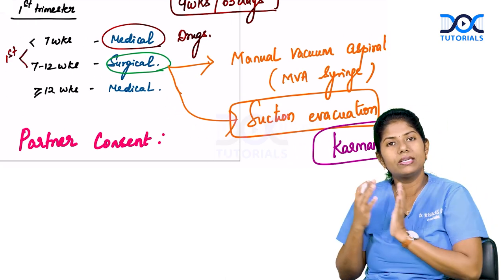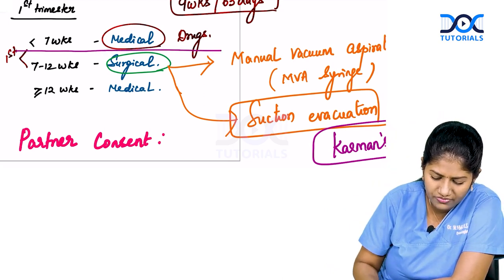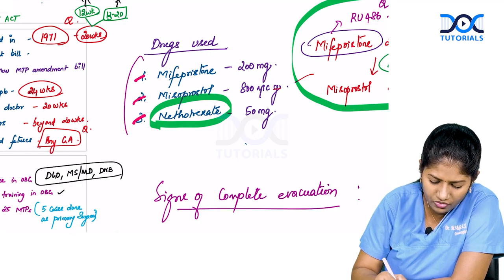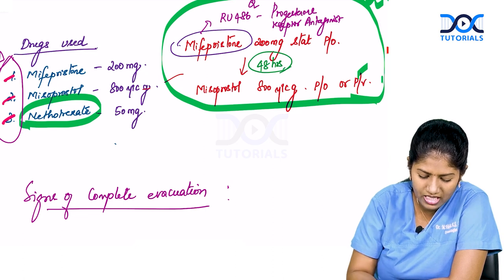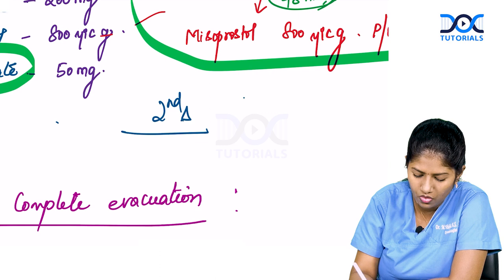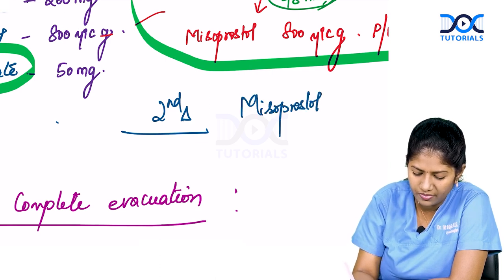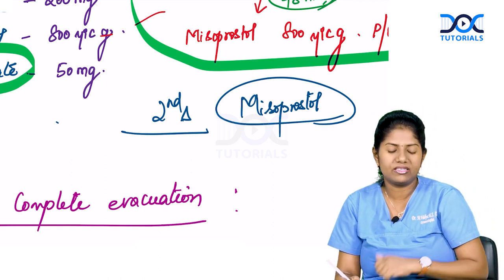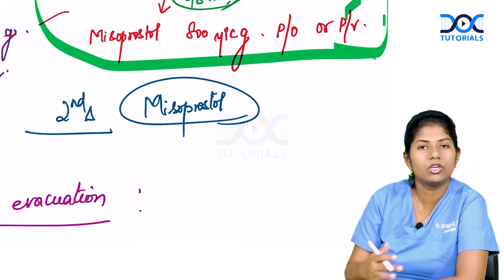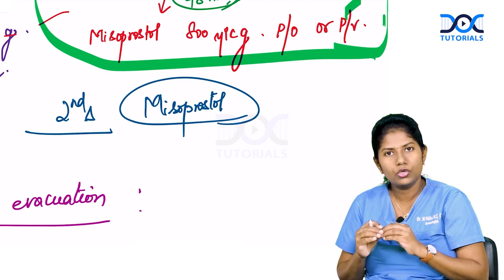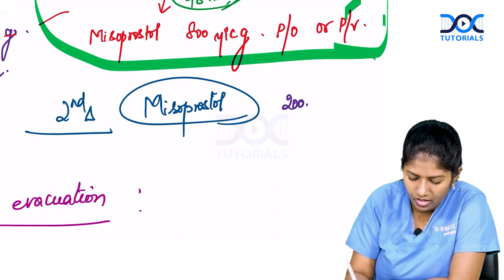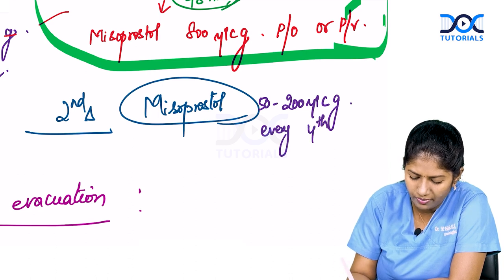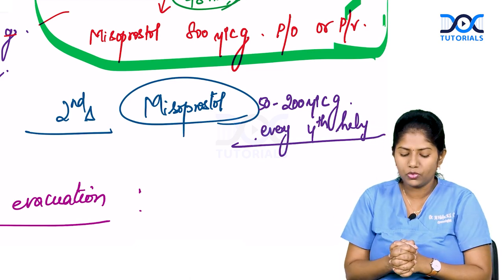For second trimester MTP, we use only misoprostol. We do not use methotrexate in the second trimester. The dose depends on gestational age — roughly between 50 and 200 mcg — and as gestation advances, we reduce the dose. It is repeated every four hours.